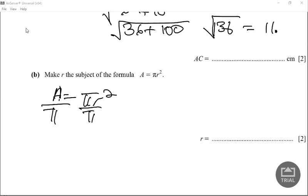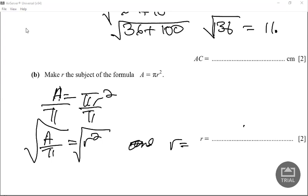So we now have A over pi equals r squared. The opposite of squared is square root, so we just find the square root. So our final answer, r is equal to the square root of the area over pi. That's how we find the radius.